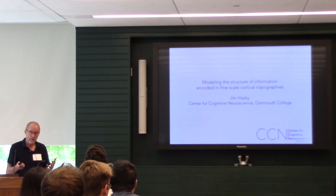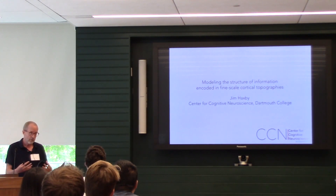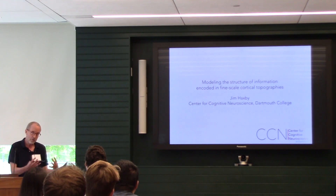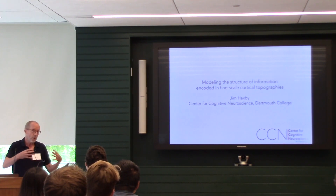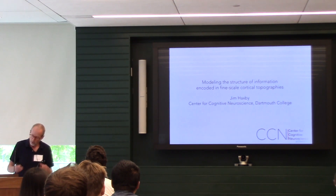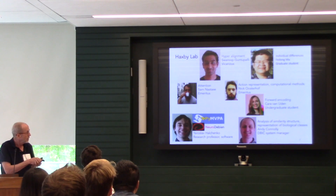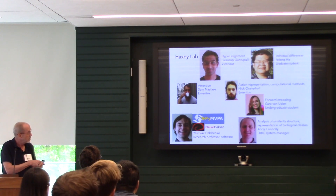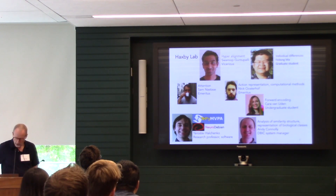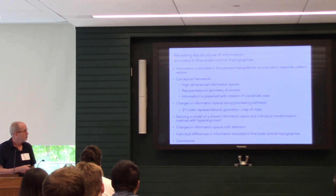Doehler yesterday talked about how they change with learning. If you look at the residuals around the cognitive map for individuals — there's an average cognitive map across individuals — and if you look at the residuals around that representational geometry, it's a very sensitive measure of how brains differ from each other. These are the people in the lab; I'll be talking about much of their work.